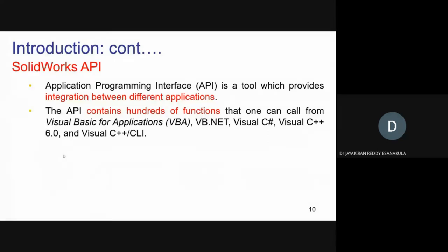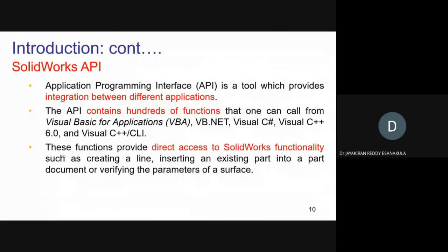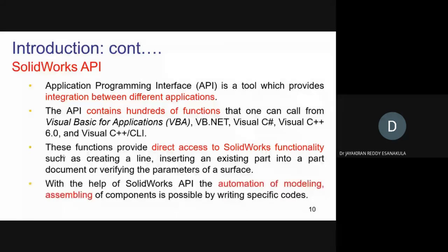This API contains hundreds of functions that one can call from Visual Basic for Applications (VBA). I am using VBA, but you can also use VB.NET, Visual C#, or Visual C++/CLI. These functions provide direct access to SolidWorks functionality. Whatever functions I mentioned can be used to trigger SolidWorks functionalities. With the help of SolidWorks API, automation of modeling and assembly of components is possible by writing specific code.